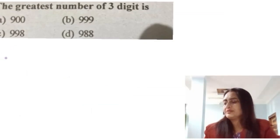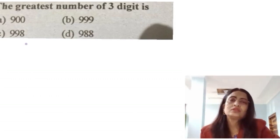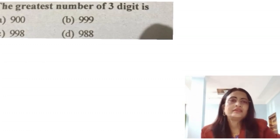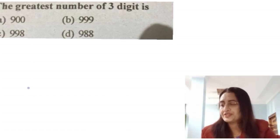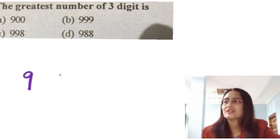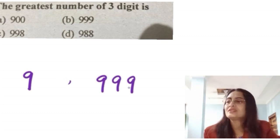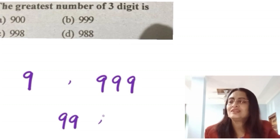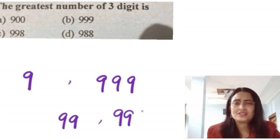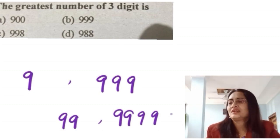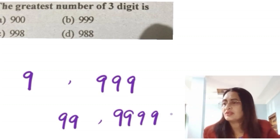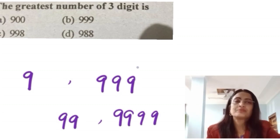Question number 2: what is the greatest number of 3 digits? Options are given. The greatest single digit is 9, so the greatest 3-digit number is 999. Similarly, greatest 2-digit number is 99, and greatest 4-digit number is 9999. So just think of all 9s. Option B is the correct answer.